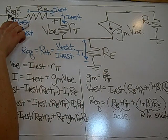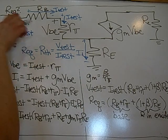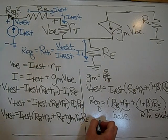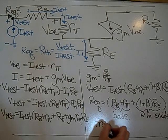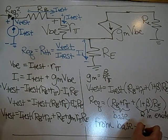So this is the resistance reflection rule. When you are at the base, looking into the base, so from the base to the emitter.